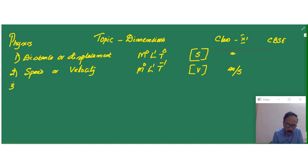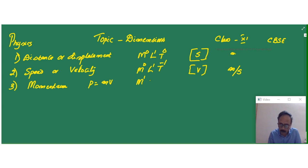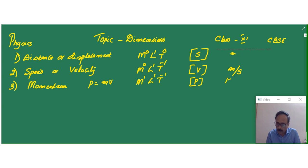Now let's talk about the next quantity: momentum. We know that momentum is nothing but the product of mass and velocity. Therefore M1, because one mass term, times L T-1. The SI unit is kg meter per second.